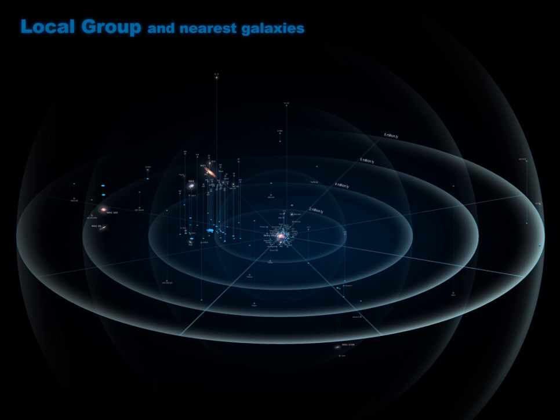The membership of NGC 3109, with its companions Sextans A and the Antlia Dwarf Galaxy, is uncertain due to extreme distances from the center of the local group.